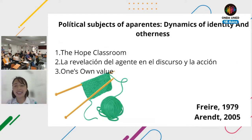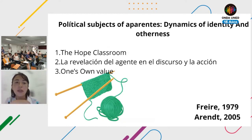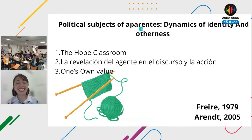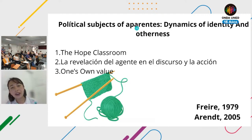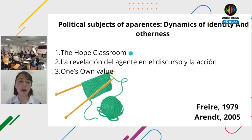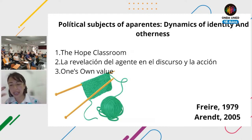The last field of study in this theoretical framework has to do with political subjects — specifically political subjects of the classroom, dynamics of identity and otherness. Here it has to do with how students can make possible a 'hope classroom' that enables students to think critically about topics of their interest.